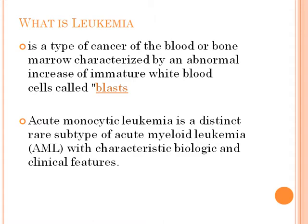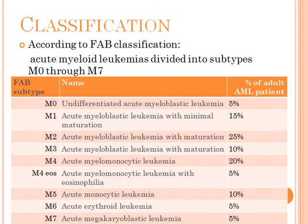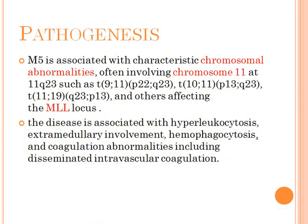According to the French-American-British (FAB) classification, acute myeloid leukemia is divided into subtypes M0 through M7. Our disease today is M5, which is acute monocytic leukemia. The percentage of adult AML patients with M5 is 10 percent.